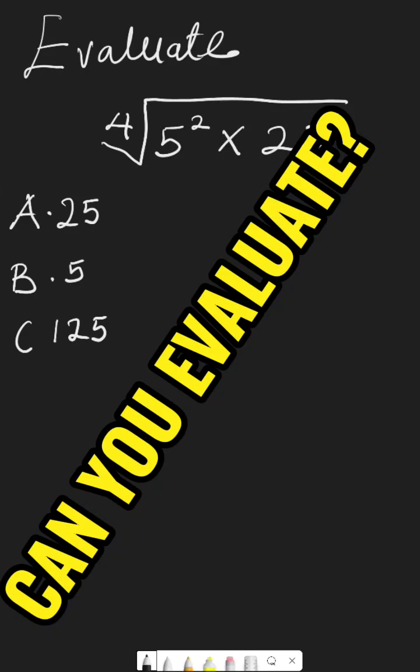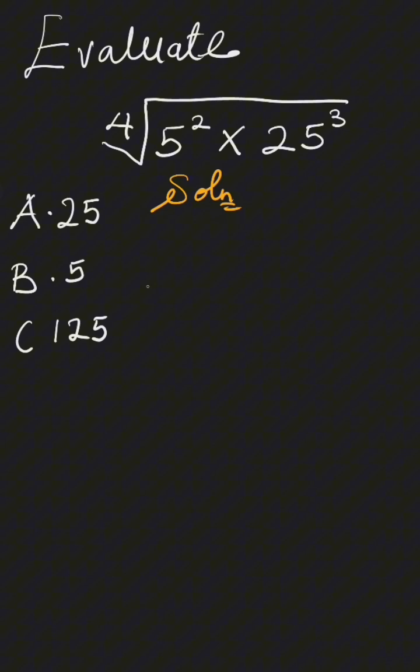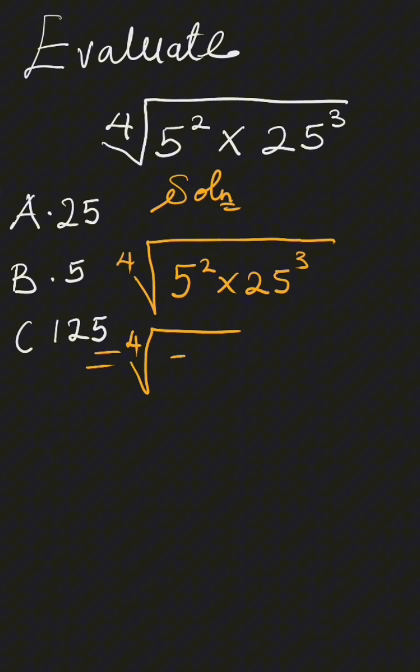Let's evaluate fourth root of 5 squared times 25 cubed, or 25 raised to the power of 3. Solution: The fourth root of 5 squared times 25 cubed is the same as the fourth root of 5 squared times